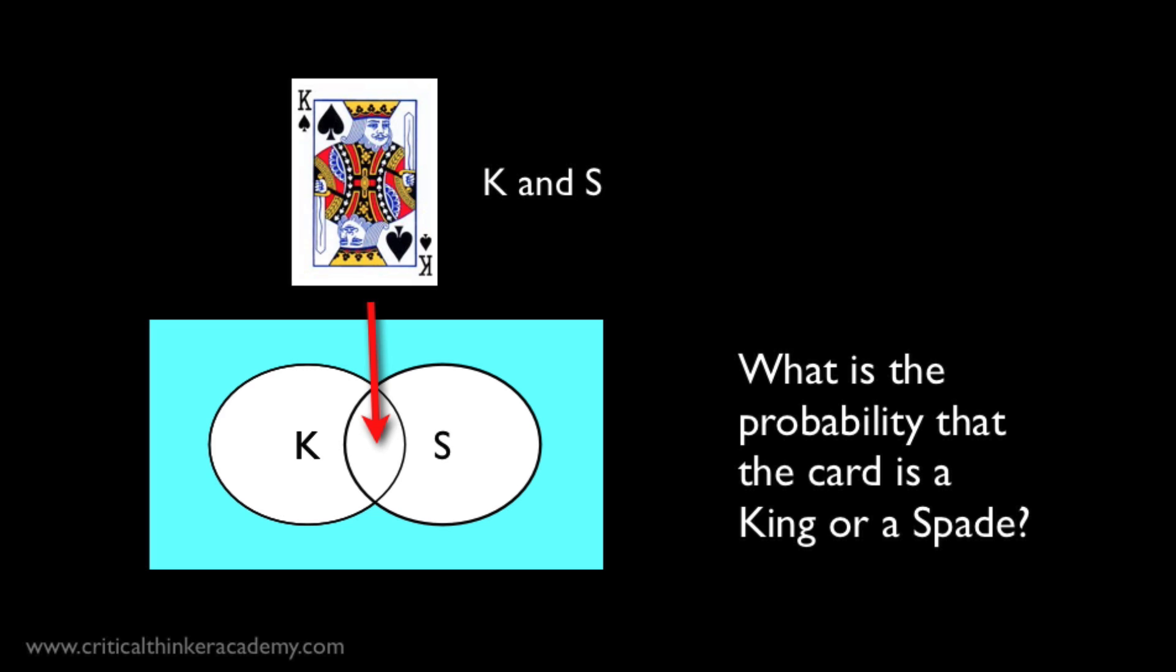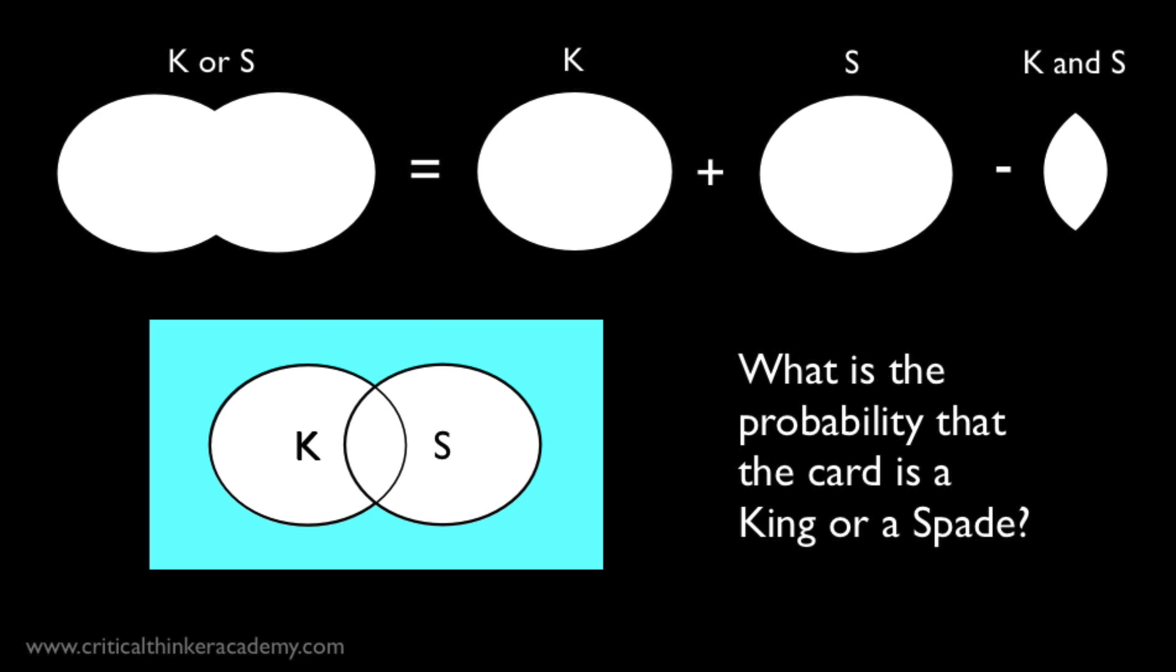What we want, actually, is the area of the white space, that peanut-shaped area defined by the external boundaries of K and S. To get that area, all you need to do is subtract the area of the overlap region from the sum of the two separate areas. This picture helps you to visualize what's going on. The probability of drawing a king or a spade is represented by that peanut-shaped area on the left. And you get it by subtracting the overlap region from the sum of the two areas.